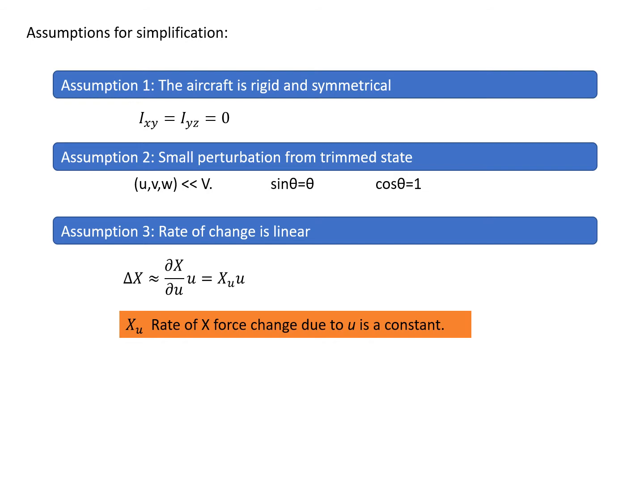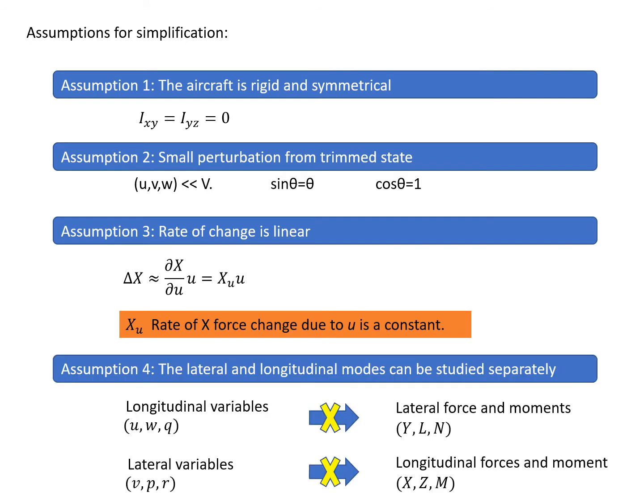Mathematically, this is equivalent to taking only the first term of a Taylor series, neglecting higher-order terms. So Xu — the rate of X force change due to velocity change u — is a constant, making the relationship linear. This is the linear rate of change assumption. The last assumption is that the lateral and longitudinal modes can be studied separately.